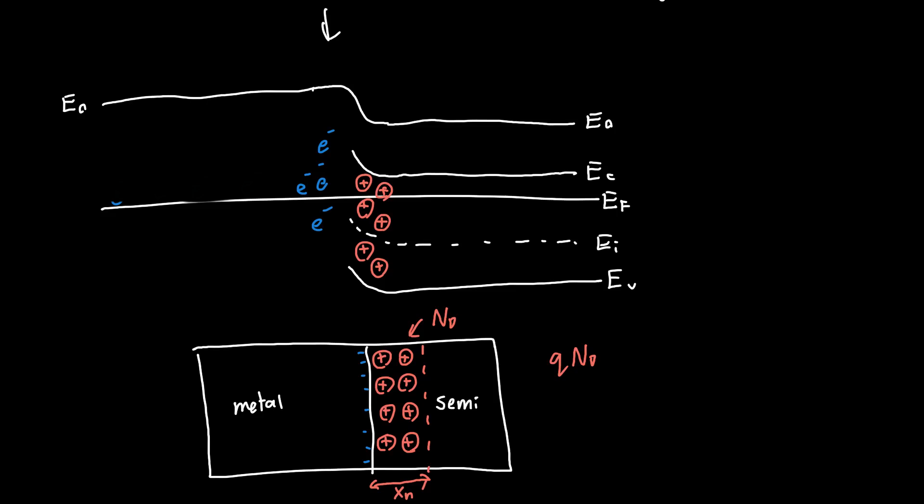The charge density within this region is just Q*Nd. Since we know the charge density, we can figure out the electric field as a function of X, and from that we can figure out the potential within this region. We can also calculate the total built-in potential. We know the amount of band bending from the work function difference between the metal and the semiconductor. Once we know that, we can figure out the depletion region Xn. This is exactly the same procedure for calculating the depletion region width of a PN junction diode.